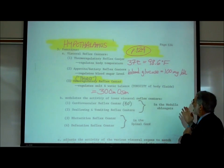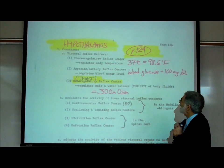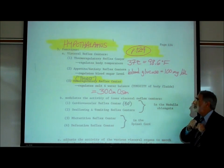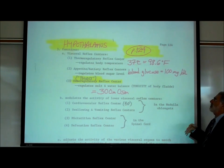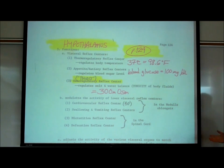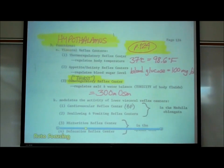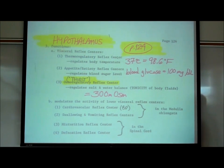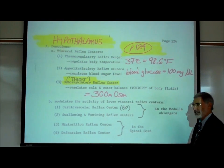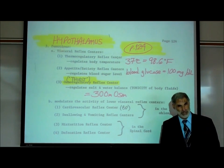Its job is to regulate the temperature of our body at about 37 degrees centigrade or 98.6 degrees Fahrenheit. We learned quite a bit about that back in section C of our lecture outline when we talked about temperature regulation.